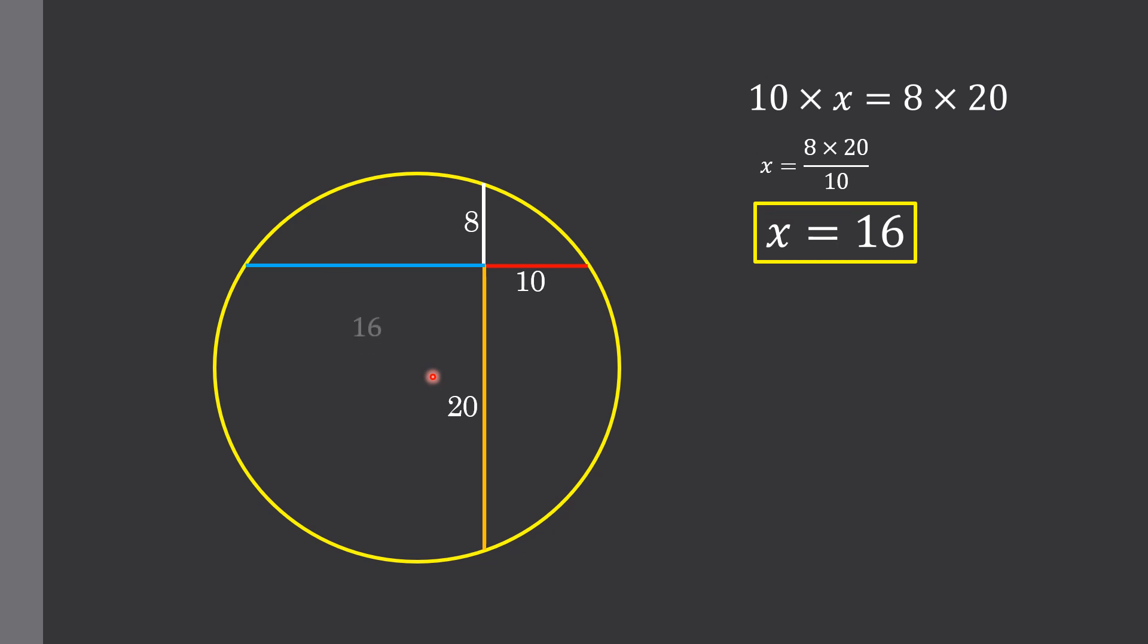So we replace x with 16. Now we draw a line segment over here which has length equal to 8 units, and we also draw a chord.